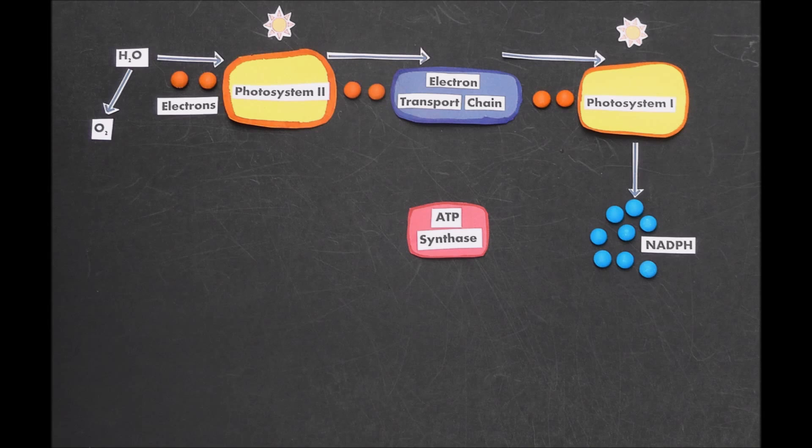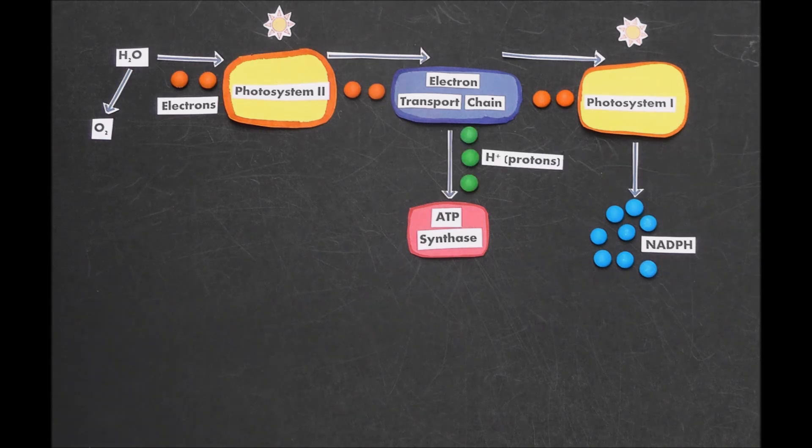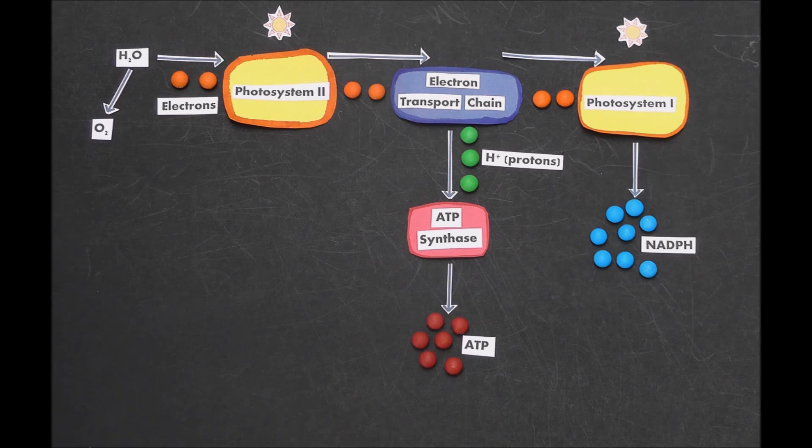Now, as the electron transport chain is passing electrons, it's also moving protons around. The ATP synthase exploits that buildup of protons to make ATP, the energy carrier molecule in the cell.